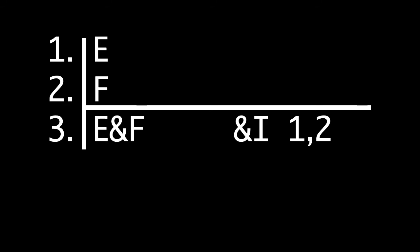If E and F were premises we could apply the AND introduction rule in this way. The rule lets us write down E and F and we write down AND introduction as our justification.